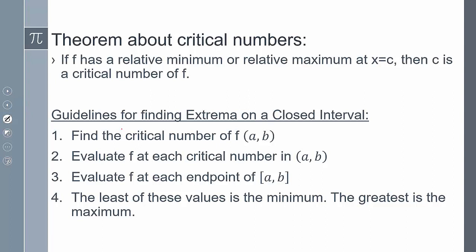Here are the guidelines for finding extrema on a closed interval. First, find the critical numbers by taking the derivative. Second, evaluate the function at those critical numbers. Third, evaluate the function at the endpoints — because the endpoints themselves could be the maximum or minimum. The smallest of all those values is the minimum, and the greatest is the maximum.